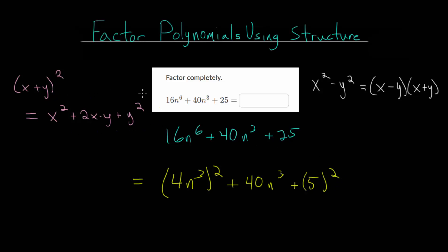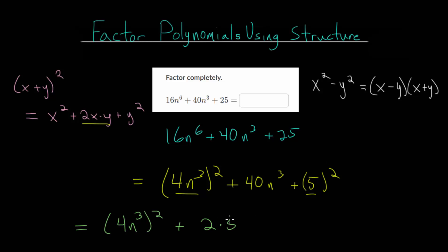It's starting to look somewhat similar to the perfect square pattern. We just need to look at the middle term and see if we can rewrite it as twice the first expression without the square, multiplied by the second expression without the square. We can pull a 2 out, and notice we have 4n to the 3rd. We can rewrite 40n to the 3rd as 2 multiplied by 5 — since we think there's going to be a 5 in there — multiplied by 4n to the 3rd. Since 2 times 5 times 4 is 40, we have the 5 and the 4n to the 3rd, which is the first squared term without the square.